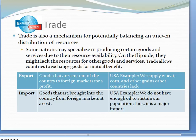Trade is also a mechanism for potentially balancing an uneven distribution of resources. Some nations may specialize in producing certain goods and services due to their resource availability. On the flip side, they might lack the resources for other goods and services. Trade allows countries to exchange goods for mutual benefit.